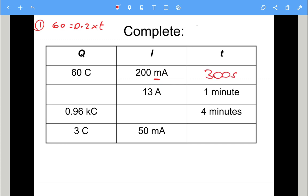Next one is simply Q equals IT. We don't have to rearrange that one. So we just need to times the numbers together. So it's 13 amps times one minute. And obviously one minute is 60 seconds. So 13 times 60 is 780 coulombs.